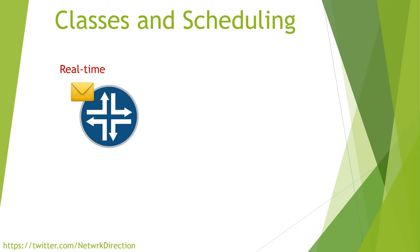If the router wants to mark the packet, this would typically be done after classification but before the packet is sent out. Remember that quality of service is locally significant, meaning that each router or switch needs to make its own decisions on how a packet is handled. This is called per-hop behavior, or PHB. Once the classification is complete, the next step is queuing.